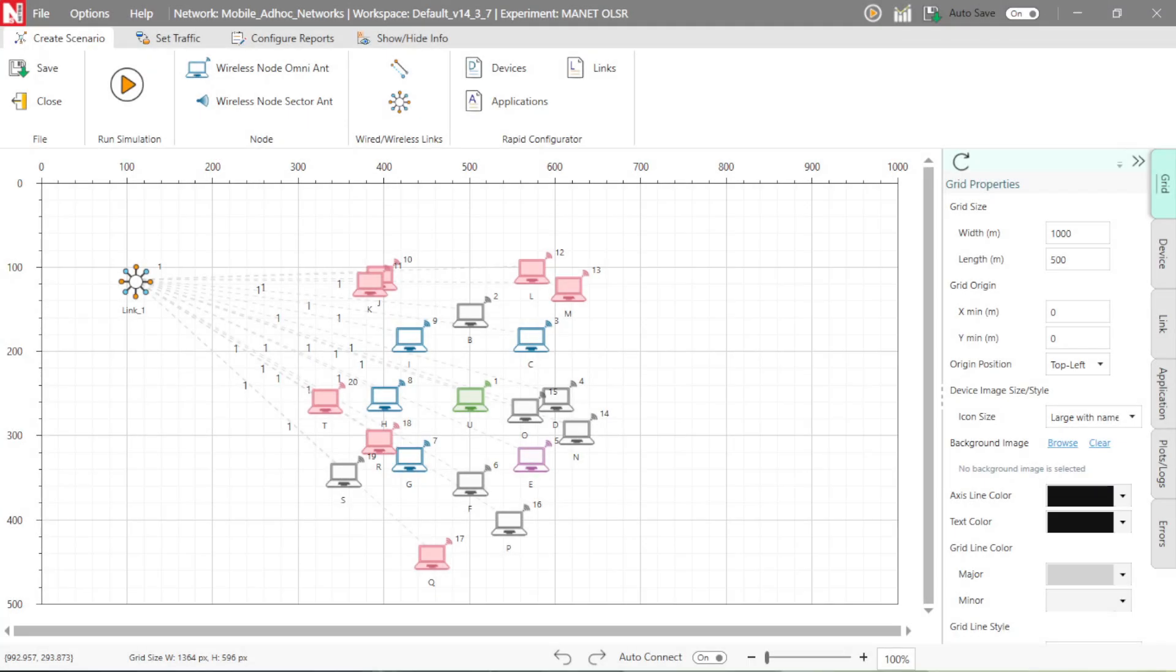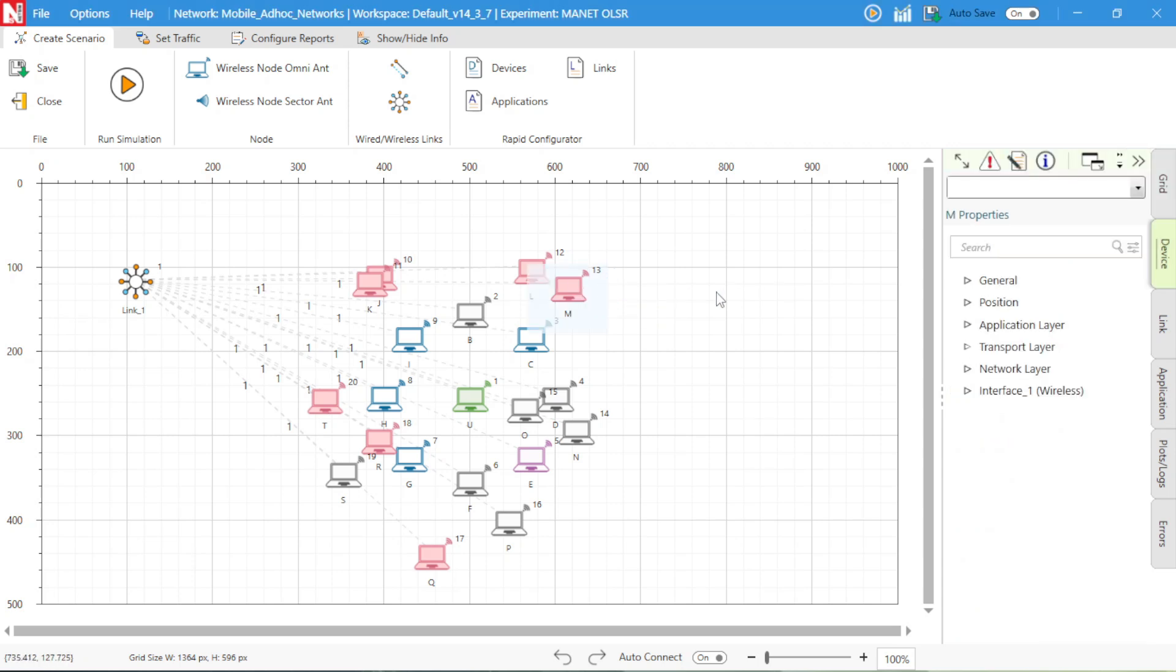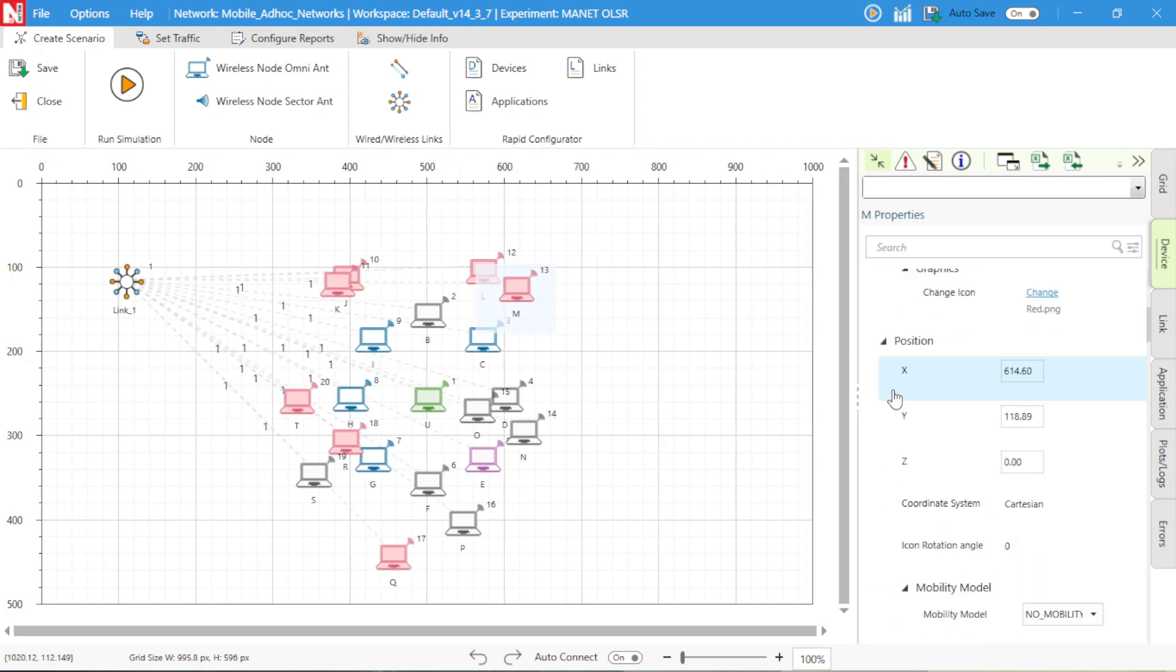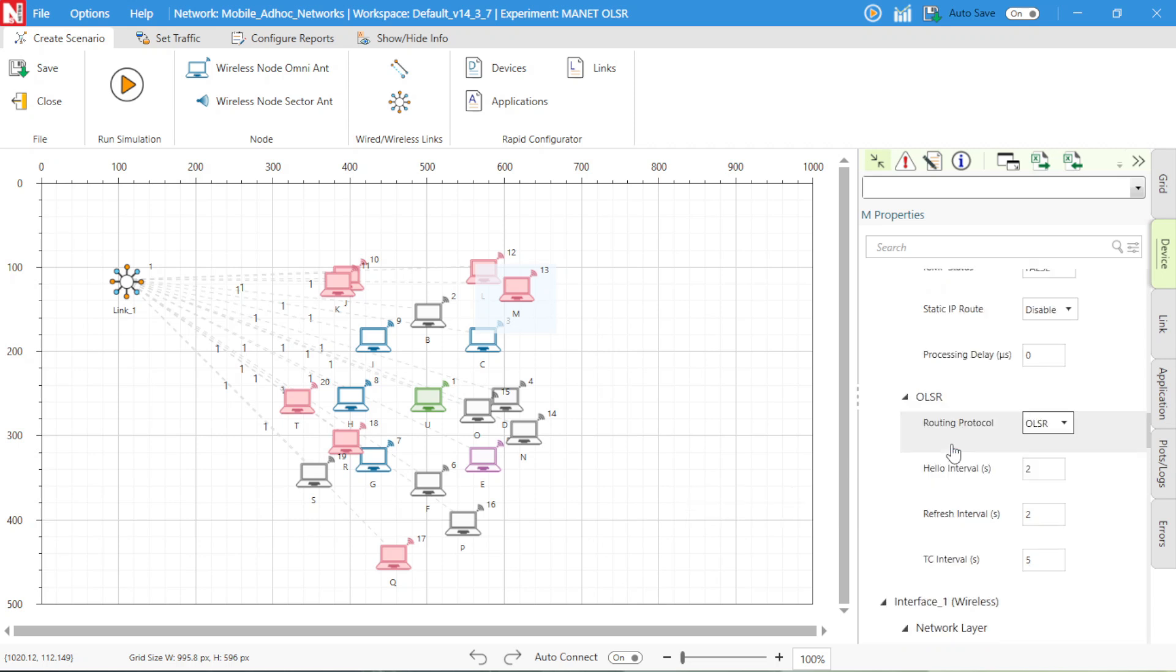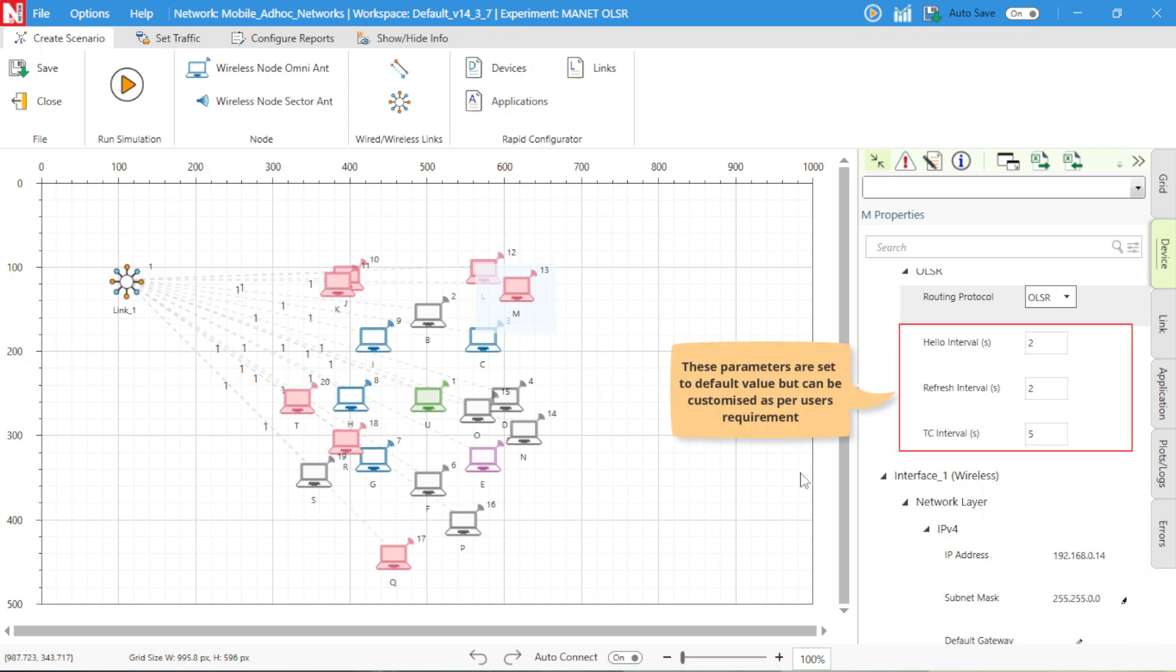Having set up the network, we next view the node configurations. Go to the properties section on the right side panel, expand the properties, and navigate to network layer. The routing protocol configured is OLSR along with its specific parameters: Hello Interval, Refresh Interval, and TC Interval. These parameters are set to default values, but can be customized by users as needed. All other layer properties are also kept at their default settings.